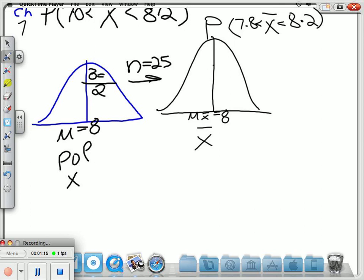With a sigma of X-bar called the standard error of the mean, equal to the original sigma of the population, divided by the square root of n. In our case, that translates into a sigma of 2 divided by the square root of 25, which is 0.4.